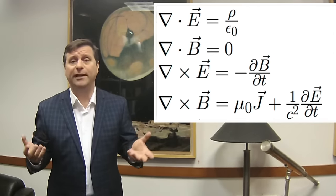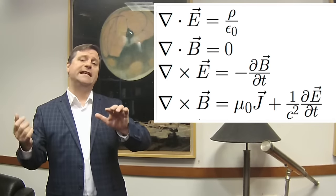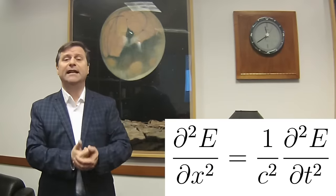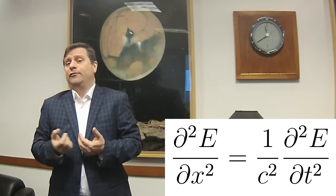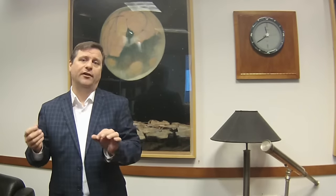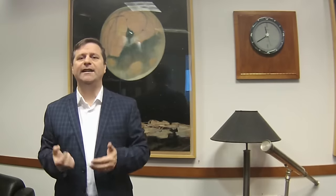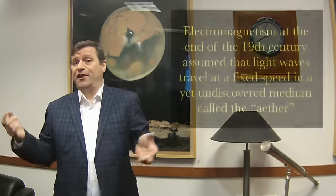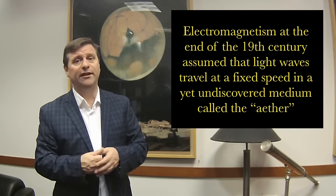Last time we ended with Maxwell's equations showing that light is a propagation of an electromagnetic wave, and that light can be any wavelength — frequency and wavelength are related by the speed of light. So there are two questions: what's the speed of light, and what is it moving in? Every theory of wave motion assumes some sort of medium, like water waves. You can't have water waves without water, and you can't have sound waves without air.